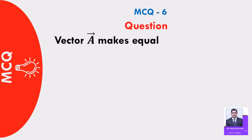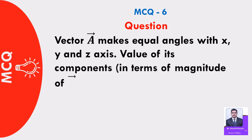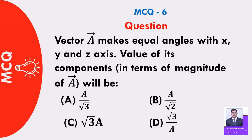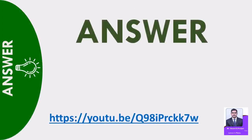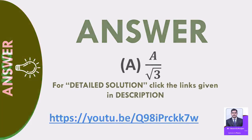MCQ 6: Vector A makes equal angles with the x, y and z axis. The value of its components in terms of the magnitude of vector A will be: A) A by root 2, B) A by root 3, C) root 3, D) root 3 by A. Answer: A by root 3. For detailed solution, click the links given in description.